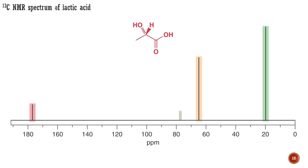Now let's return to the sample spectrum of lactic acid, and you can see the features we have discussed. This is a 100 MHz spectrum; the horizontal axis is frequency but usually quoted in ppm. We can tell immediately from the three peaks at 177, 66, and 20 ppm that there are three different types of carbon atom in the molecule. Again, ignore the brown solvent peaks at 77 ppm. You need not worry about the fact that the signals have different intensities — this is a consequence of the way the spectrum was recorded, and in carbon NMR spectra signal intensity is usually of no consequence.